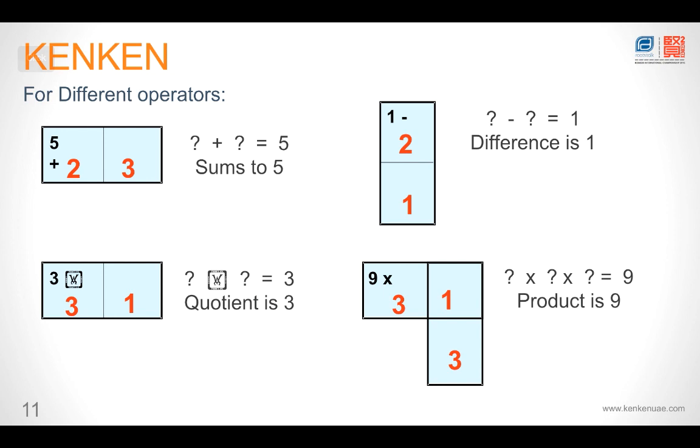This is an interesting one. This cage has 3 boxes. So we would need 3 numbers. It says 9 times. So we would need to multiply 3 numbers to get 9. Hence, 3, 1 and 3. 3 times 1 is 3. Again, 3 times 3 is 9. Alrighty, great. So these are all the rules that you would need to know to solve your own KenKen puzzle.